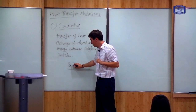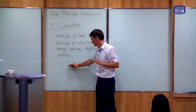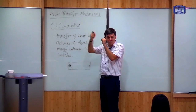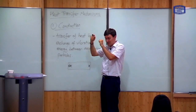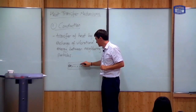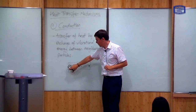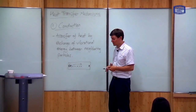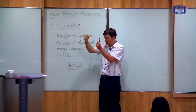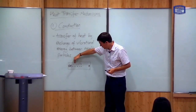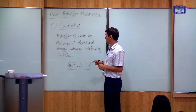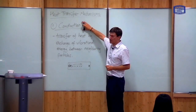As a particle vibrates, it will excite the particle next to it. So a high-energy particle vibrates a lot, and therefore the particle next to it starts to vibrate. Through these interactions, the vibrational energy is transferred from one end to the other. The particles at high temperature have a lot of energy and they transfer this energy through interactions along the solid. This is called transfer of heat by conduction.